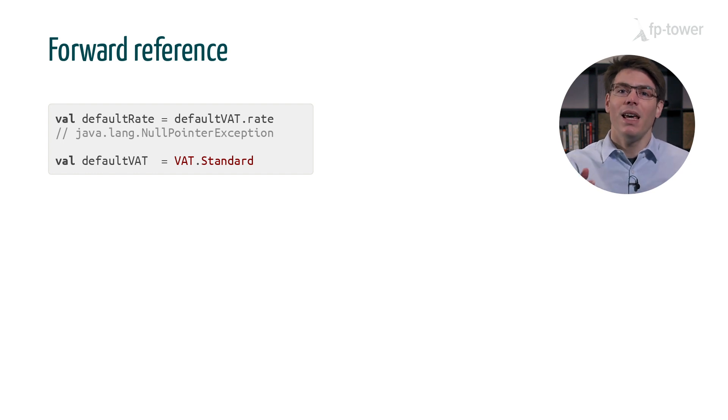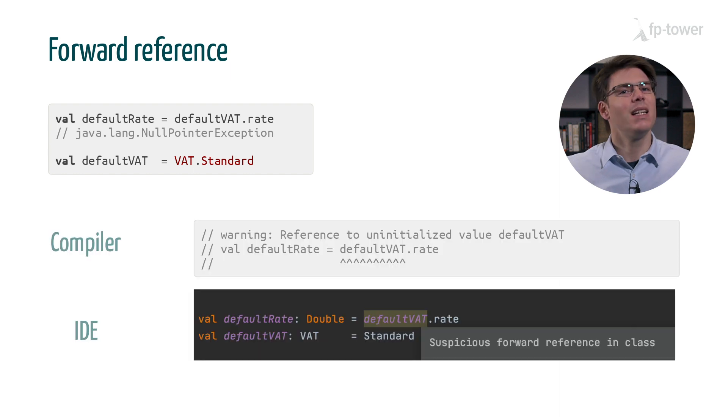For example, here default rate references a variable down the line, but variables are initialized from top to bottom, which means that when we call defaultVAT.rate, defaultVAT hasn't been initialized - it's currently null, and that's why we get an error. This issue is a bit annoying, but both the compiler and IDE will give us a warning, so in practice we rarely fall into this trap.